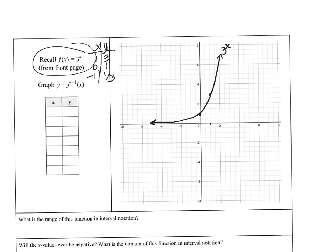If we're interested in the inverse — remember, the inverse undoes that function — we're going to interchange our x and y values. In our table, instead of input 1 giving output 3, we plug in 3 and get 1. Instead of input 0 giving 1, we plug in 1 and get 0. And instead of negative 1 giving 1 third, we plug in 1 third and get negative 1. This function does the reverse of our exponential — it tells us the exponent given the result of an exponential expression.